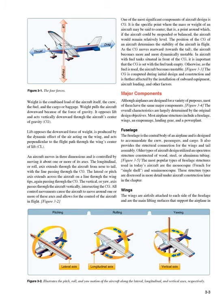Fuselage. The fuselage is the central body of an airplane and is designed to accommodate the crew, passengers, and cargo. It also provides the structural connection for the wings and tail assembly. Older types of aircraft design utilized an open truss structure constructed of wood, steel, or aluminum tubing. The most popular types of fuselage structures used in today's aircraft are the monocoque (French for single shell) and semi-monocoque. These structure types are discussed in more detail under aircraft construction later in the chapter.